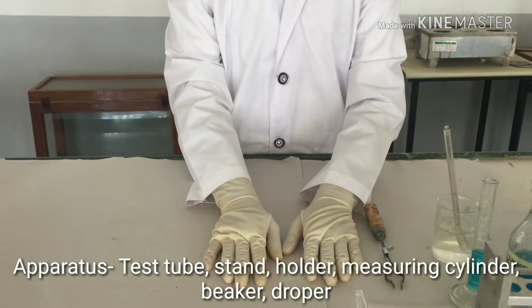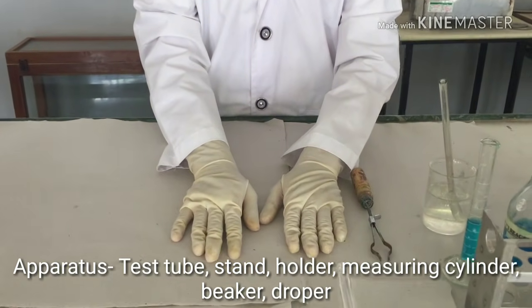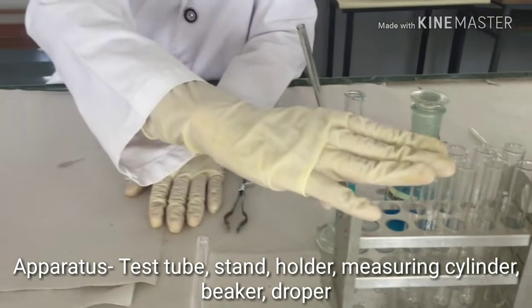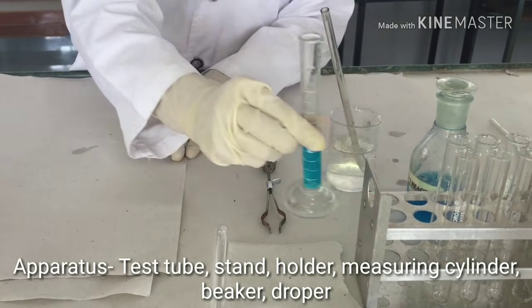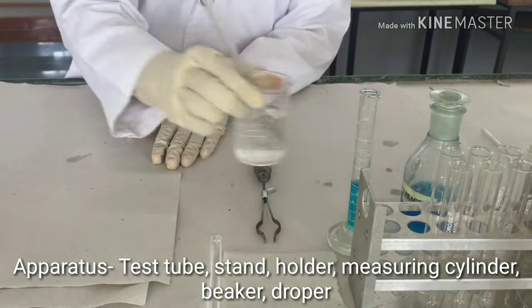We are going to perform the Benedict test. The apparatus used for this test are test tubes, test tube stand, a test tube holder, measuring cylinder, and a beaker containing the sample.